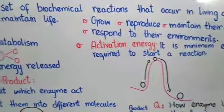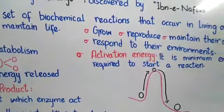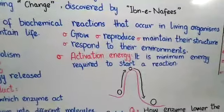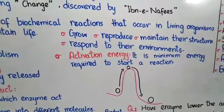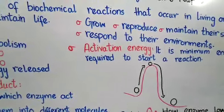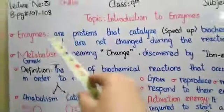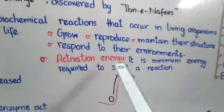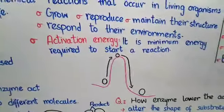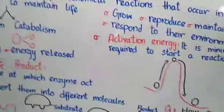The need for activation energy acts as a barrier to the beginning of a reaction — if it is not available, the reaction will not start. To lower this barrier, enzymes help us. Enzymes lower such barriers by decreasing the requirement for activation energy, allowing the reaction to proceed further.